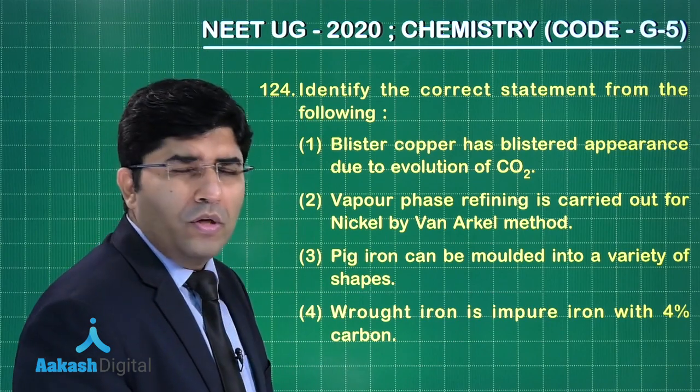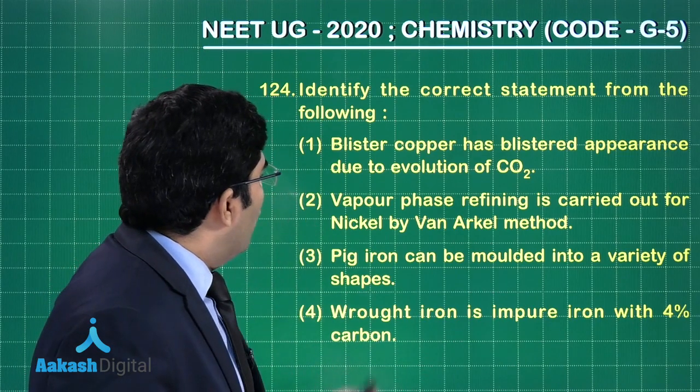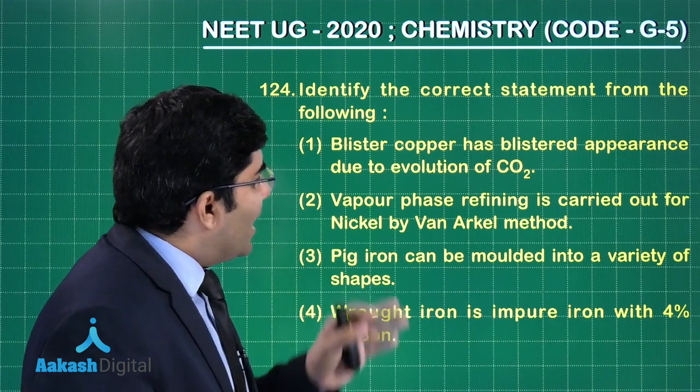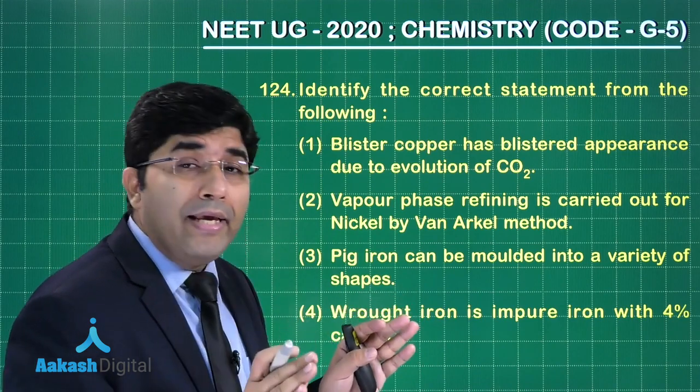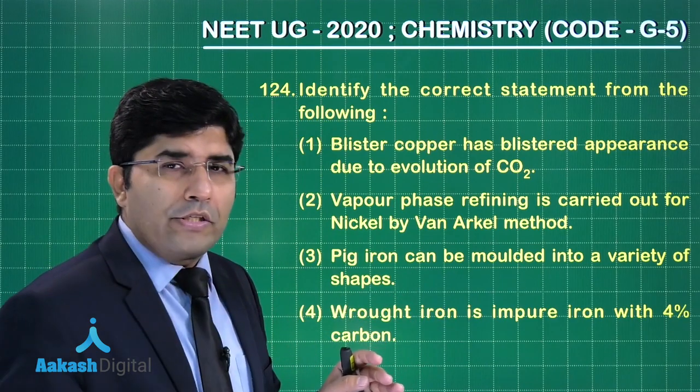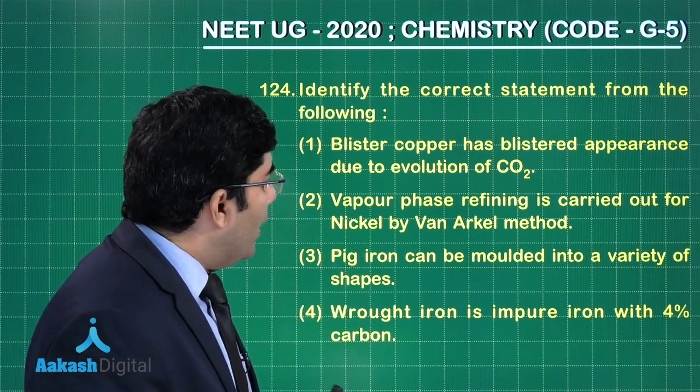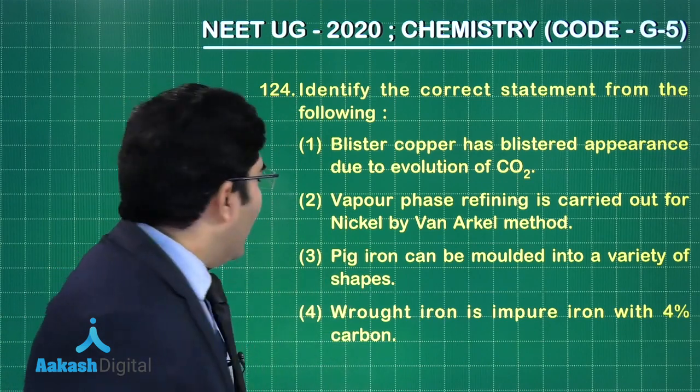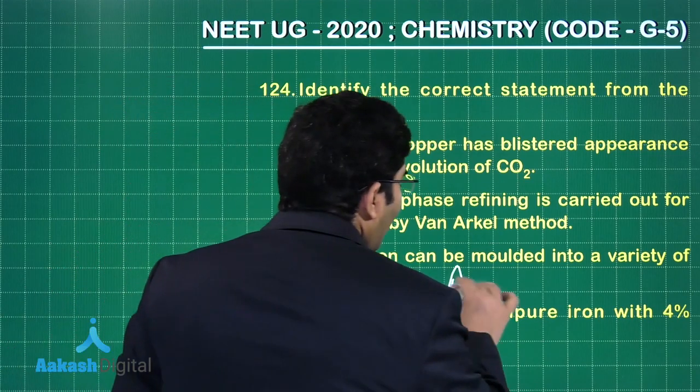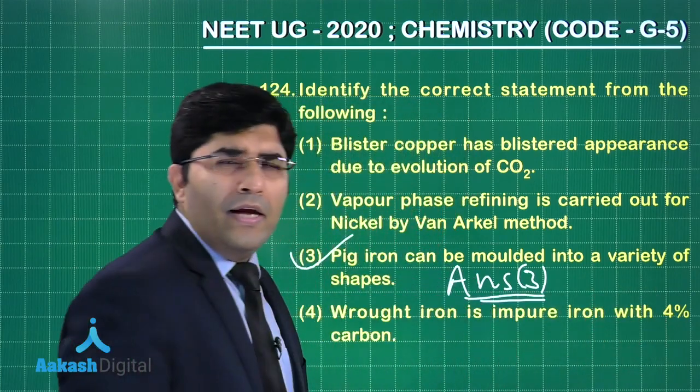Second is vapor phase refining is carried out for nickel by Van Arkel method. No, it's by Mond's process. And third one is pig iron can be molded into a variety of shapes. That is absolutely correct, meaning the third one is the correct answer. So the correct answer is option number three.